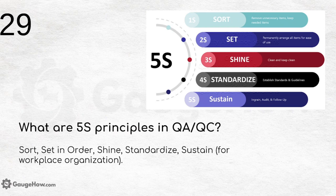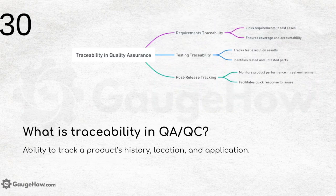What are the 5S principles in QA and QC? This is an important question. The 5S principles are: Sort, Set in order, Shine, Standardize, and Sustain — used for workplace organization. Details of what each S means are provided in the figures, so make sure to review them carefully.